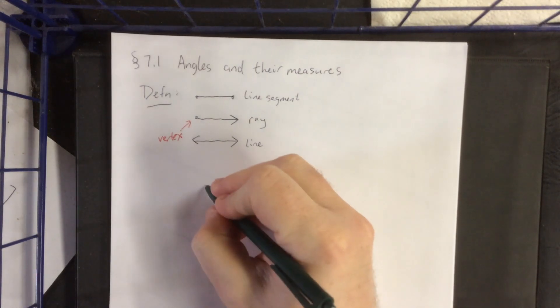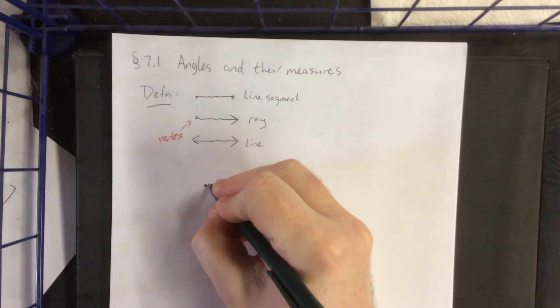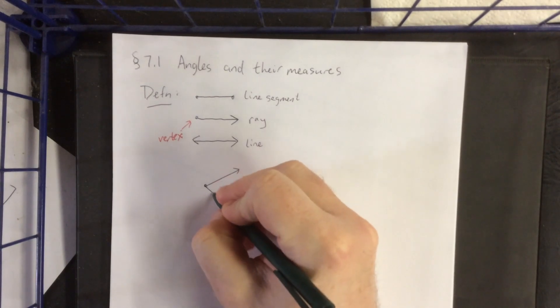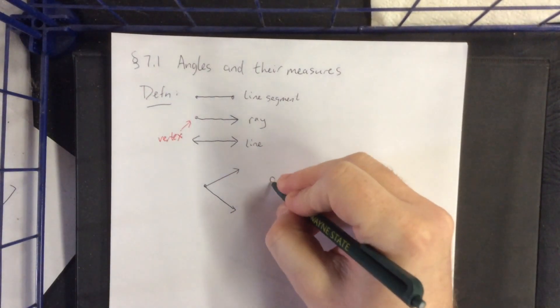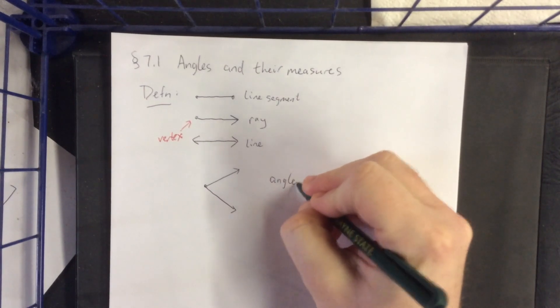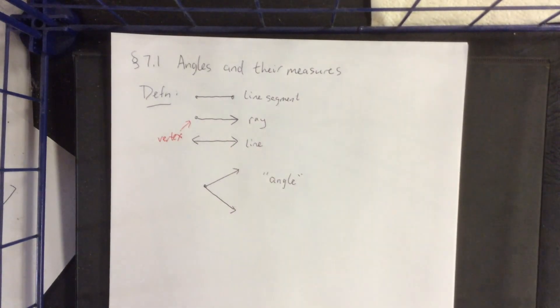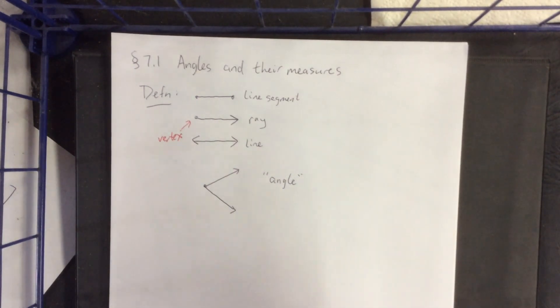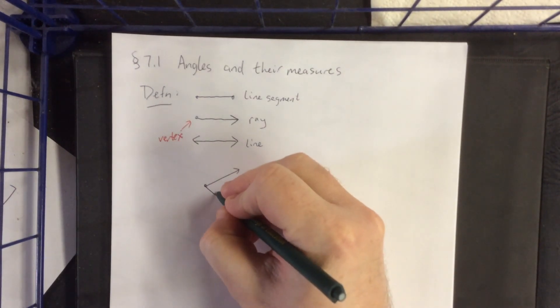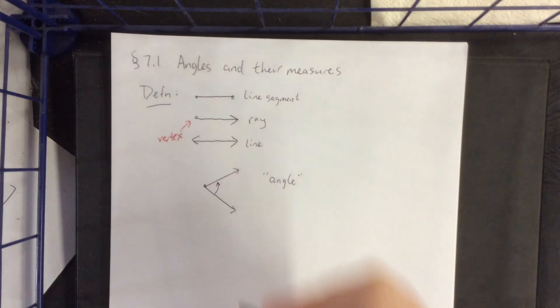Now, any time two rays share a common vertex, it looks something along these lines. When two rays share a common vertex, it creates what is known as an angle. An angle is a way of measuring a rotation of an object. So imagine that we are at the vertex and we rotate from one direction to the other direction. Now, in order to do so, we indicate the direction of the rotation with a little curved arrow on the inside.